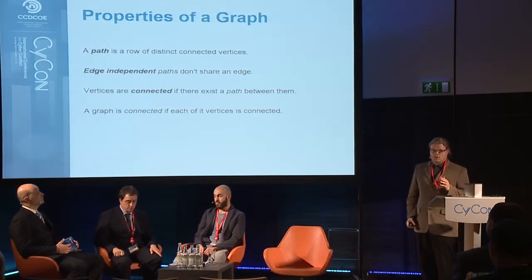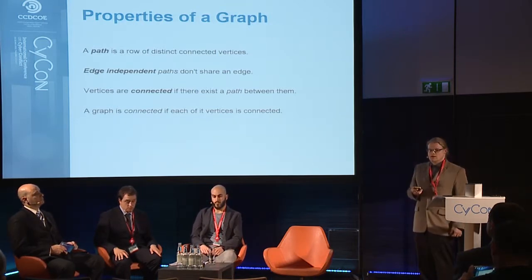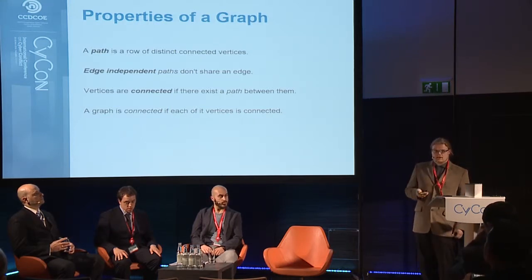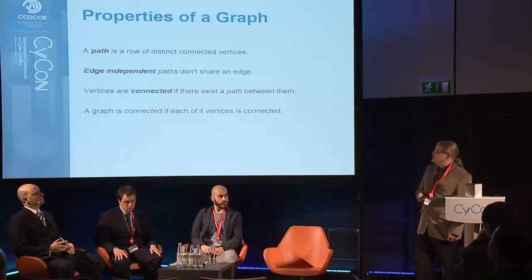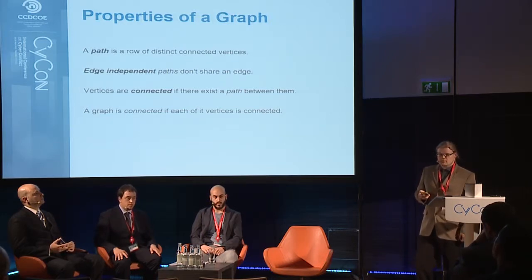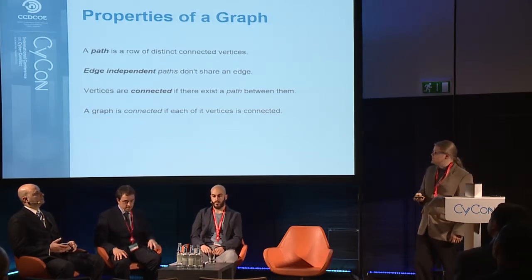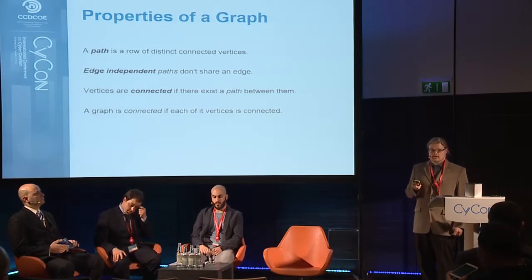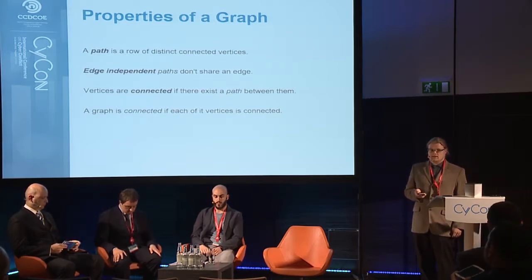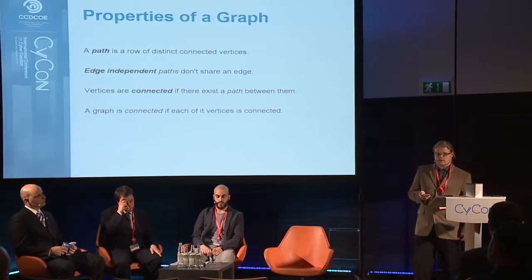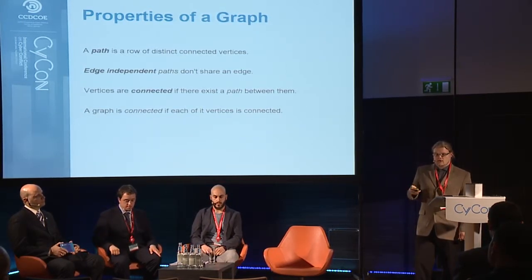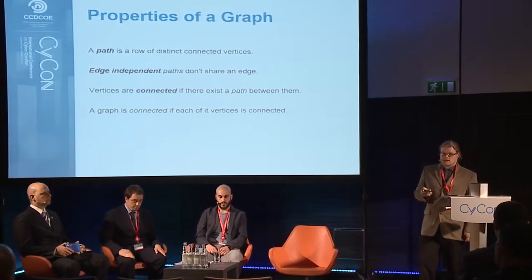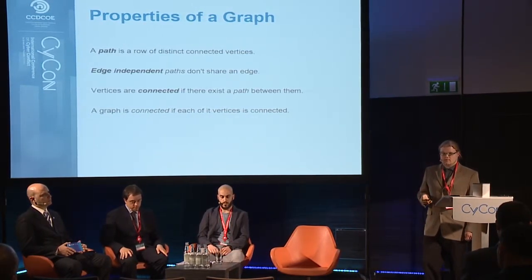This kind of walk is actually called an Euler path, and paths are really useful components of a graph. A path is a row of distinct connected vertices. We say that two paths are edge-independent if they don't share an edge. We say that two vertices are connected to each other if there exists a path between them, and that the graph is connected if there exists a path between each pair of vertices.